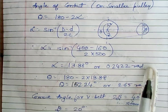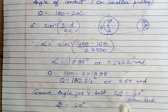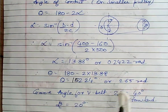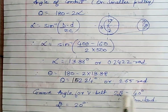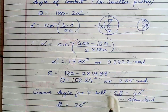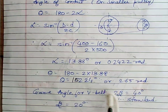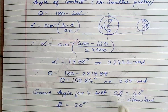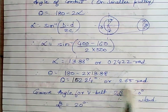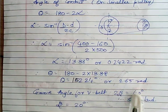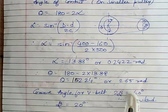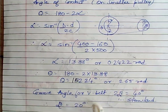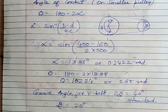For the V-belt pulley, one additional parameter is the groove angle. Unlike flat belts, V-belts have a groove angle because the cross-section is trapezoidal. The total groove angle 2β for standard V-belts is around 40 to 45 degrees; we assume it to be 40 degrees. Therefore, β comes out to be 20 degrees.